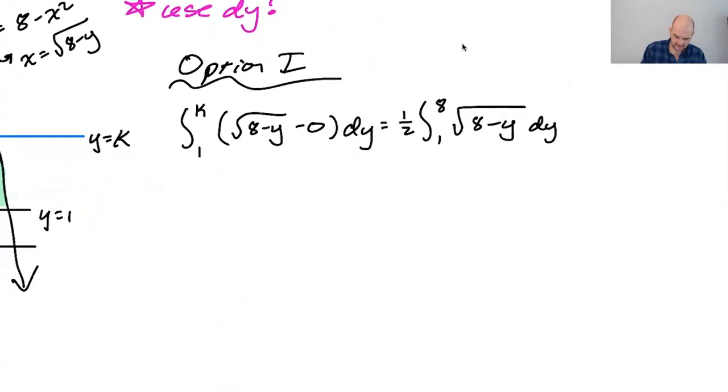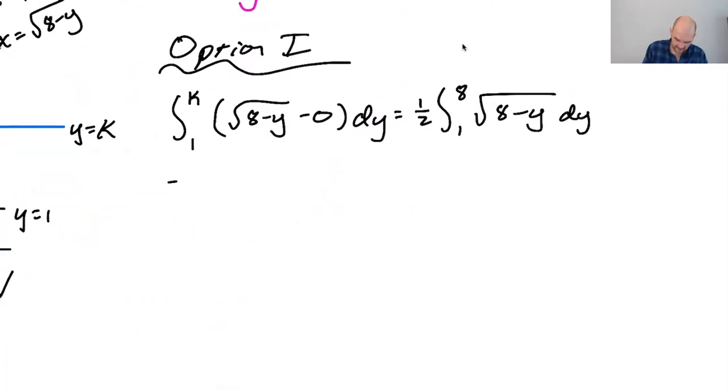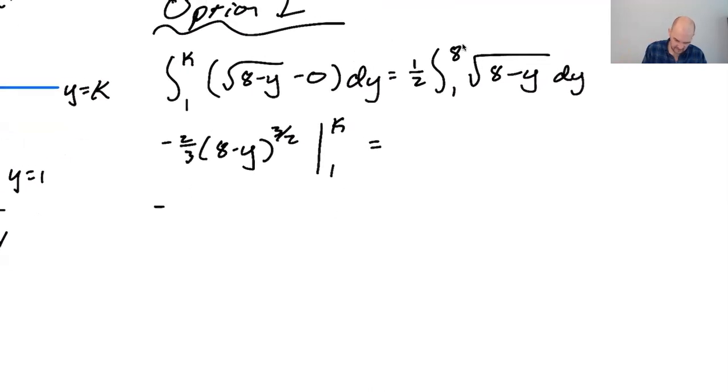All right, let's see if we can do this. So negative 2 thirds, 8 minus y to the 3 halves. So I'm doing a u substitution. And there's a negative du, right? Because u is equal to 8 minus y. So negative dy is du. So dy is negative du. So that's where that negative came from. So this will be negative 2 thirds, 8 minus k.